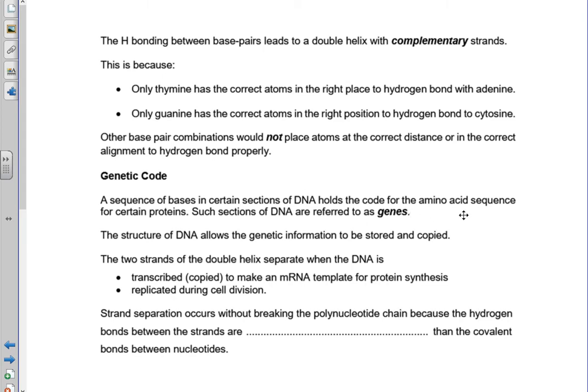The information to produce all the proteins in your cell is encoded in the DNA, and each section of DNA that encodes a single protein is called a gene. DNA can be copied — that's called replication, which occurs during cell division. It can also be transcribed, where a copy of the DNA is made into RNA, and that's used as a template for producing proteins. Whenever the DNA is replicated or transcribed, the two chains of the double helix have to separate, and that can occur because the base pairs are held together with hydrogen bonds, which are weaker than the covalent bonds that hold the nucleotides together in the polynucleotide chain.